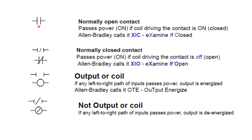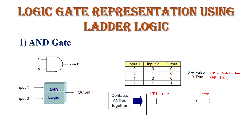The normally open contact symbol is called XIC (Examine If Closed) in Allen-Bradley terminology. The normally closed contact symbol is called XIU (Examine If Open). For outputs or coils in ladder logic: if the output is energized, it is shown with a specific symbol called OTE (Output Energized); if the output is de-energized, it is shown in a different form. In this way we represent input and output in ladder logic diagrams.